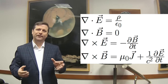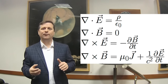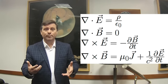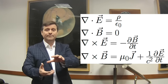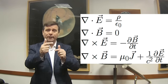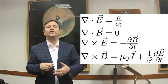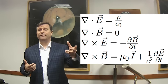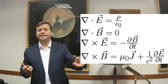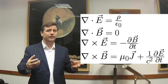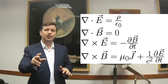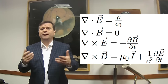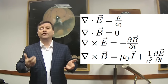Maxwell is considered the granddaddy of all this — he took these disparate ideas, formalized them mathematically, and showed how they're all interrelated. The four equations link the electric field, the magnetic field, currents, changing currents, position in space, and changes in time — all interlinked.